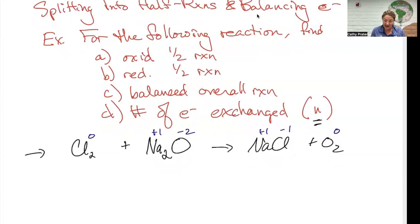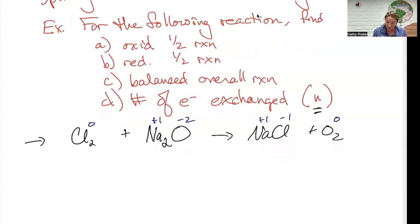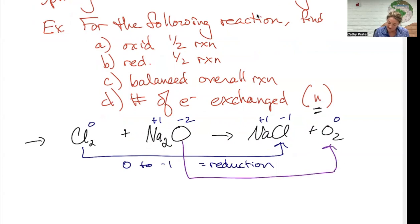So if I look now at what is changing charge, chlorine went from zero to negative one. That's a reduction, because negative one is lower than zero. Sodium didn't do anything. Oxygen went from a negative two to a neutral, which is an oxidation by going up in charge.